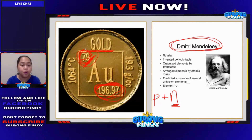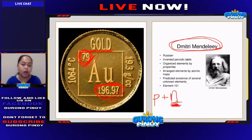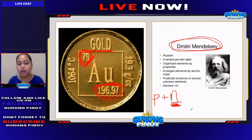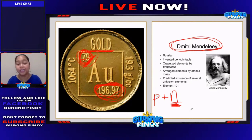Subtract the number of protons from your atomic mass to get the number of neutrons, because atomic mass is protons plus neutrons. So those are some of the things you can see in your periodic table. The answer to our question is letter C — atomic number.